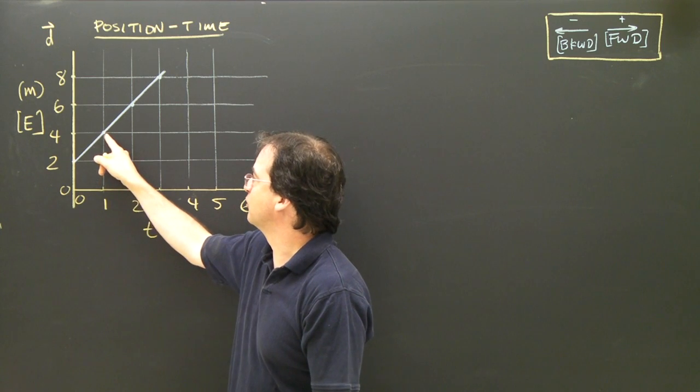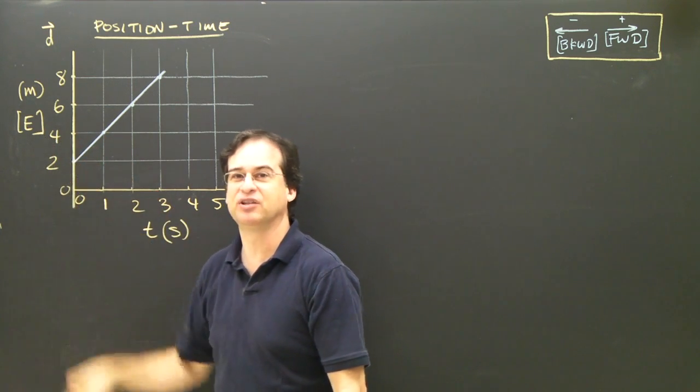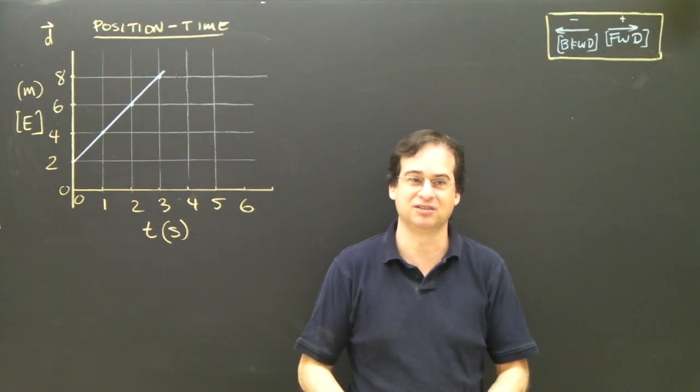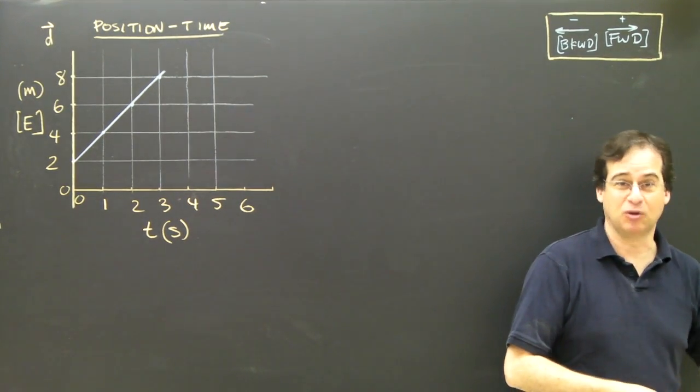At one second, I go up and look at the graph, and I'm at 4 meters. Positive 4 meters, so 4 meters east, so I'm over there. So I was at 2 meters east, and now I'm at 4 meters east, so I'm moving forward.